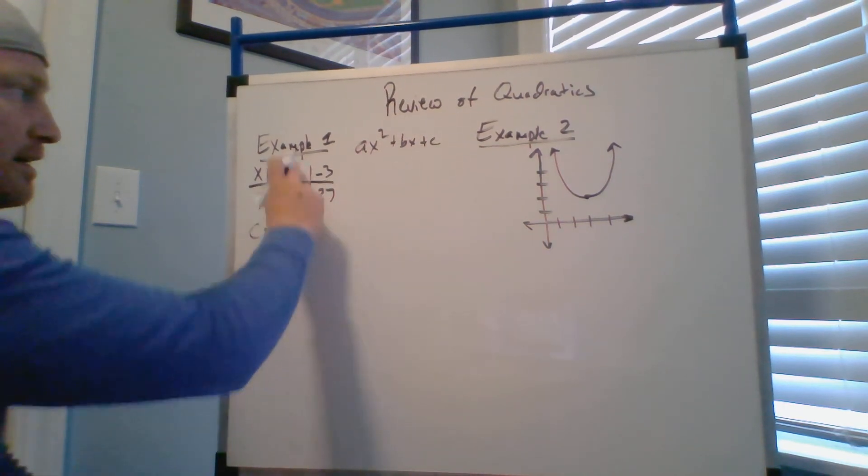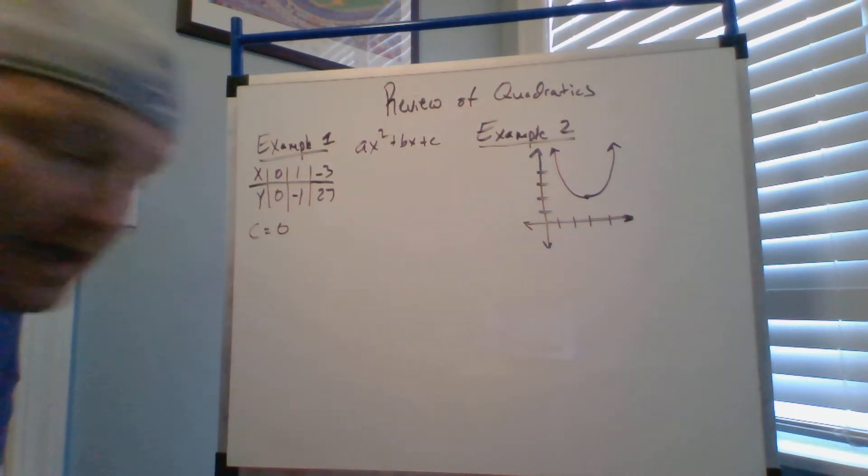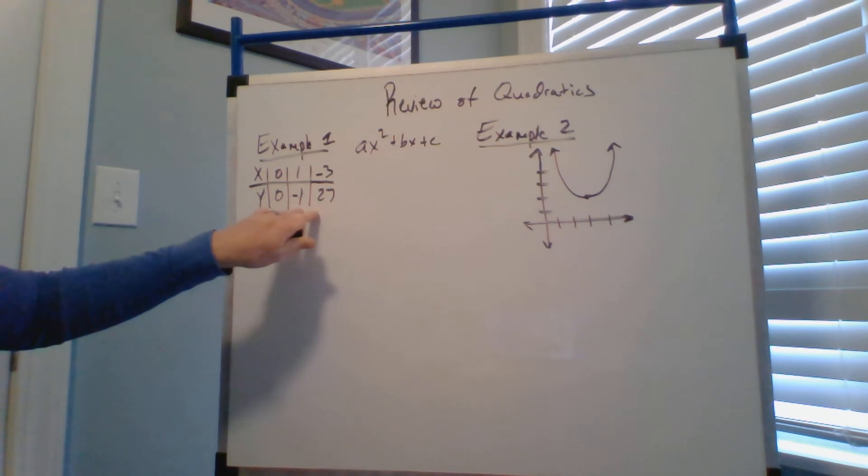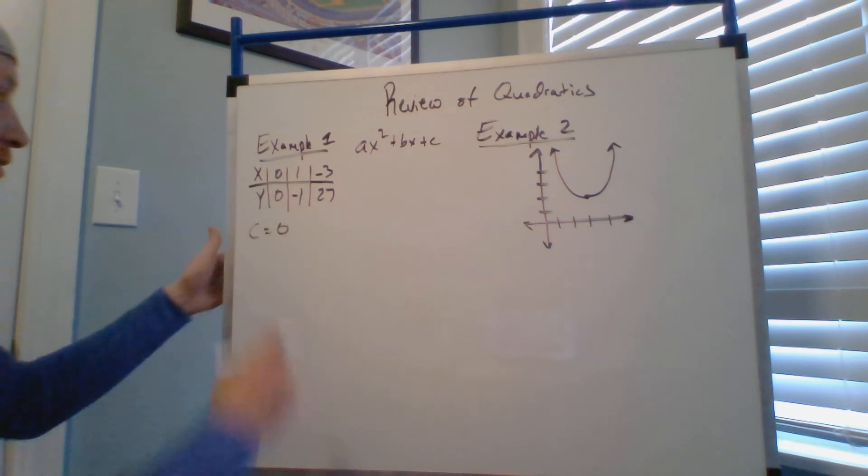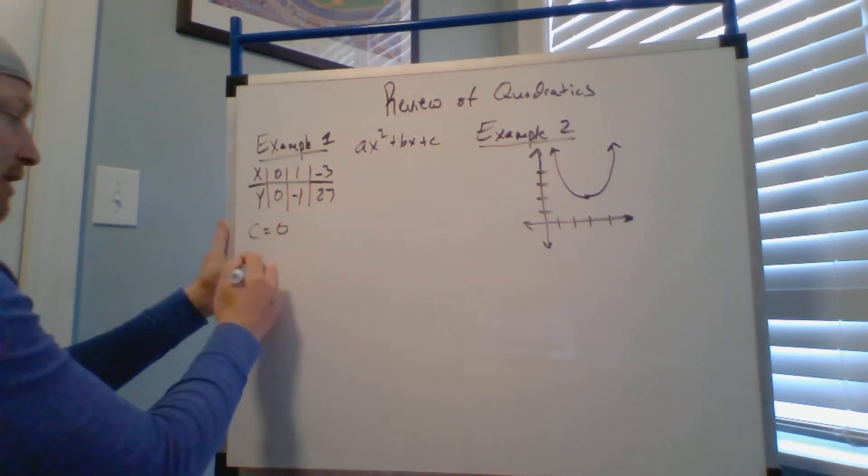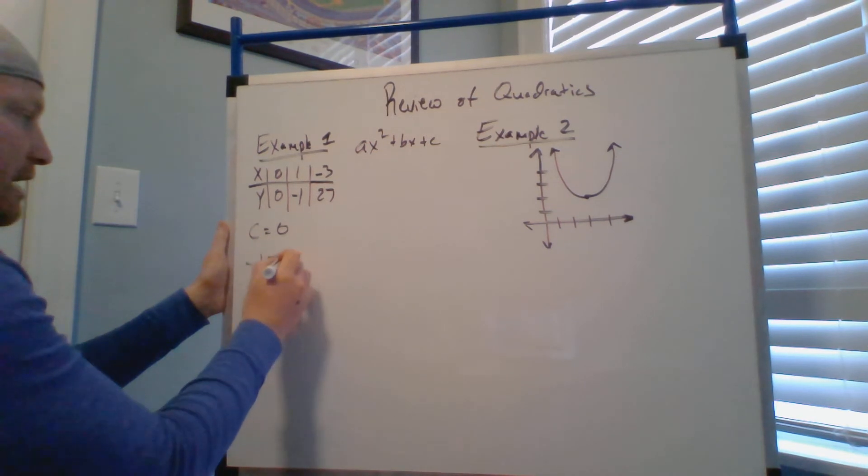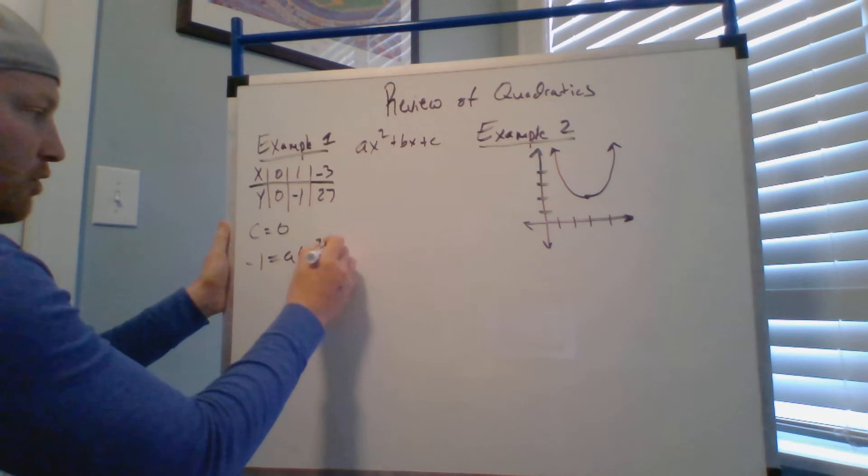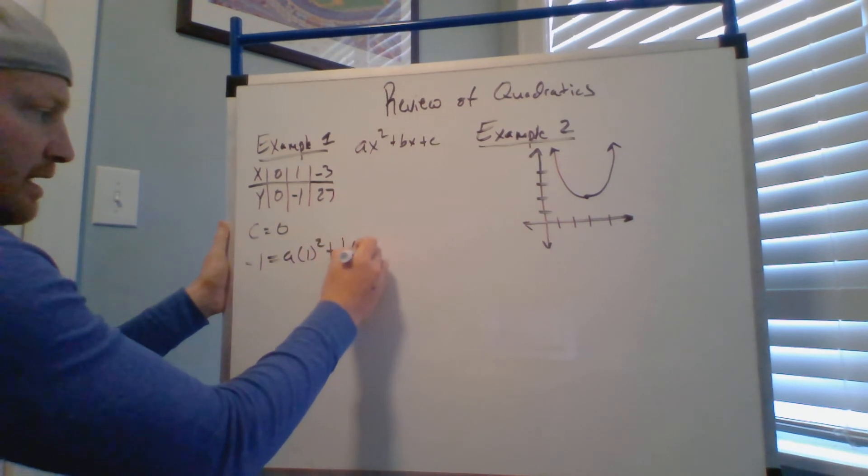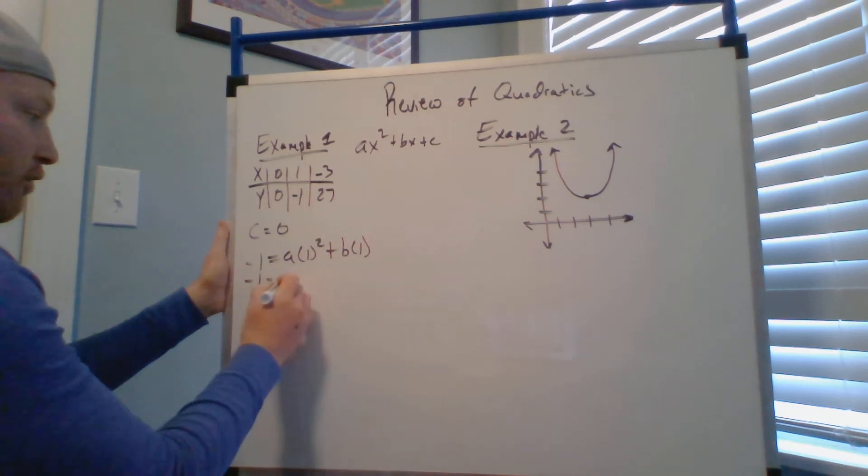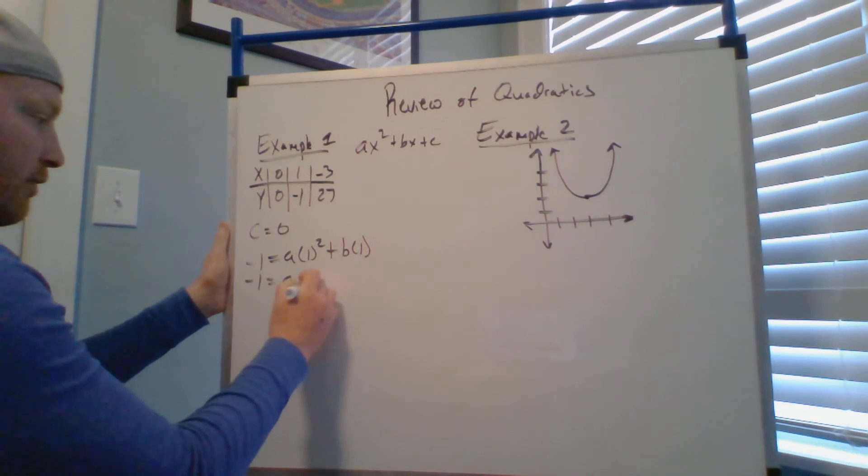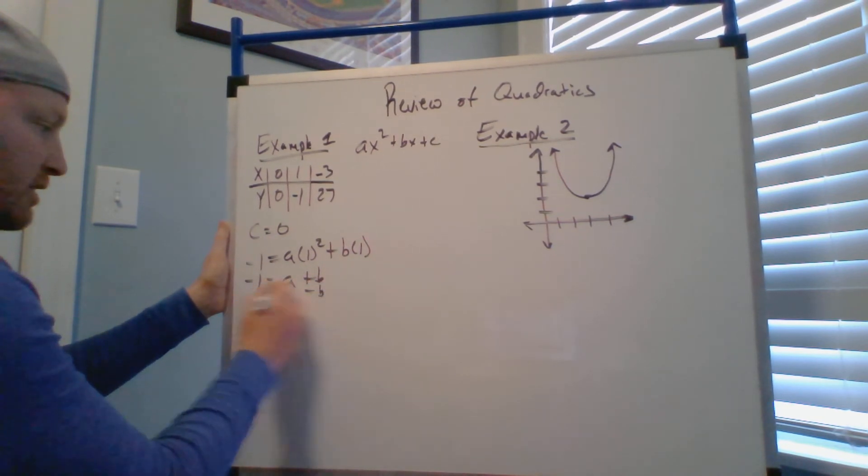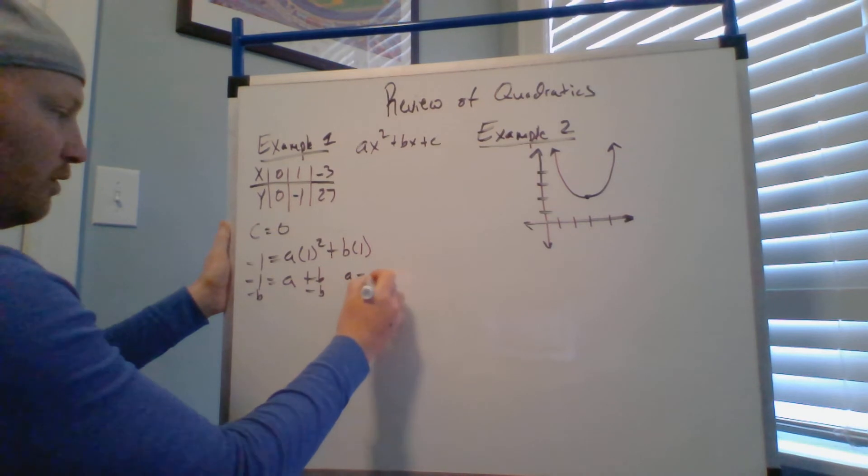Now I'm going to use systems of equations to figure out what my a and my B coefficients are. First things first, I know that when y is negative one, x is one. So I got a times one squared plus B times one. Negative one equals a plus B, and I'll write this in terms of a, so I'll subtract B from both sides. So a equals negative one minus B.